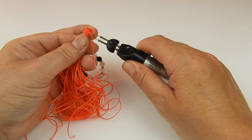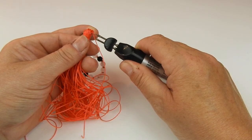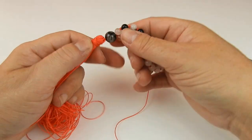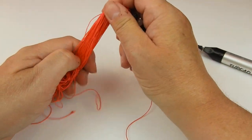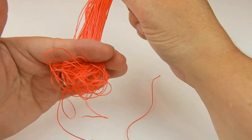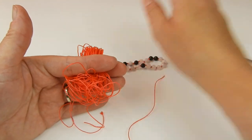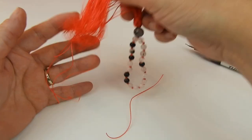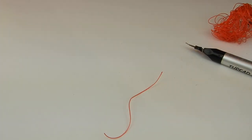I'm just going to take my thread zapper and thread zapper that off. Then all we would need to do is cut through all of our loops at the bottom. I'm not going to do that now, but you just take your scissors, give it a little trim so they're all the same length.